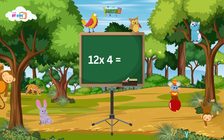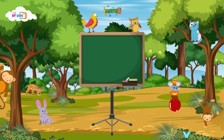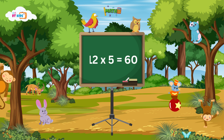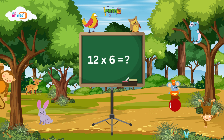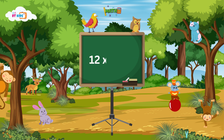12 fours are 48. 12 fives are 60. 12 sixes are 72.